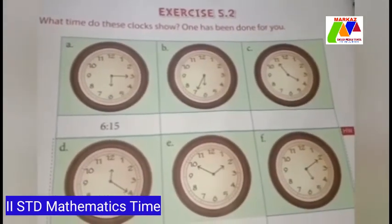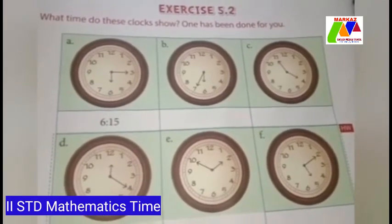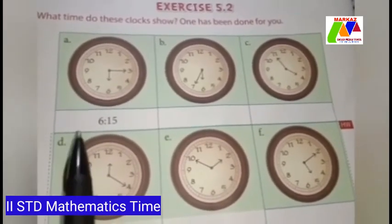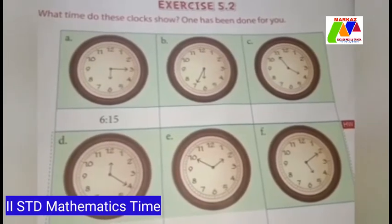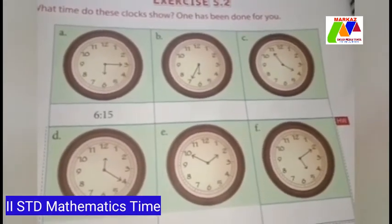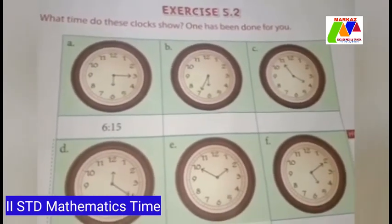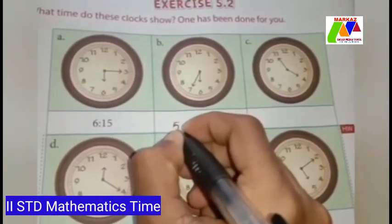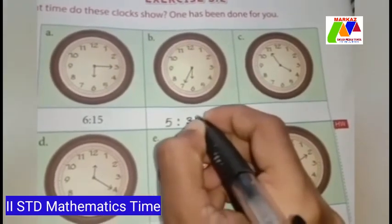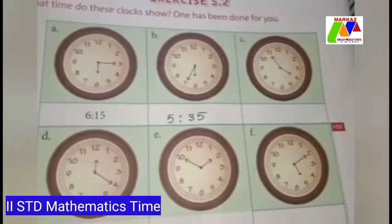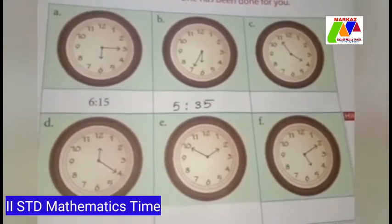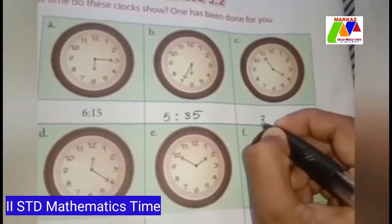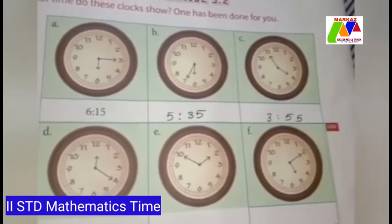Children, now let's take your textbook exercise 5.2. Look at these clocks. Can you say what time do these clocks show? The first clock shows 6:15. The second clock shows 5:35. The next clock shows 3:55.